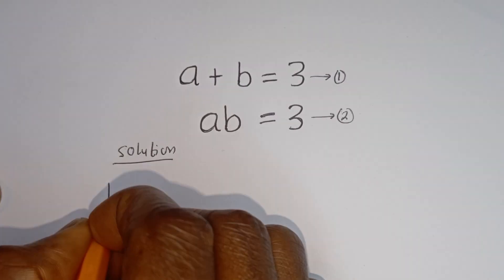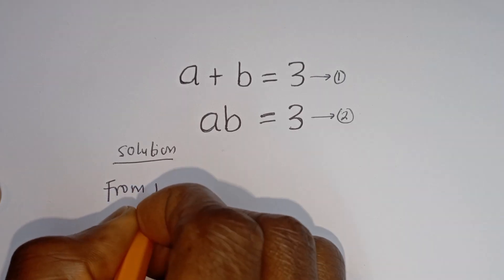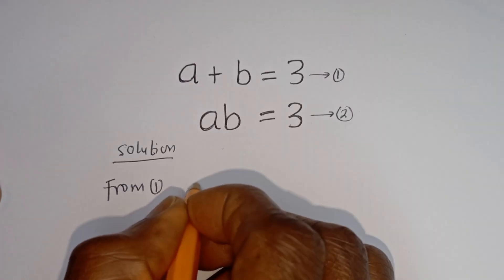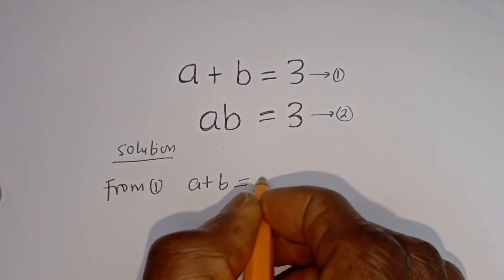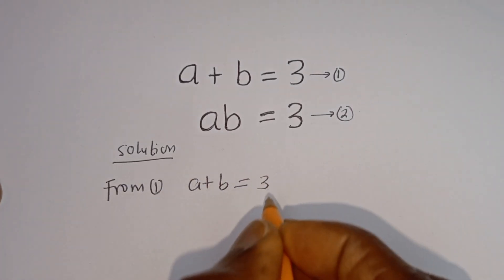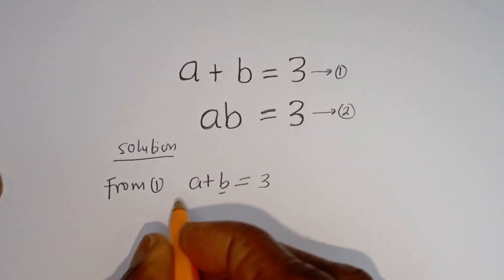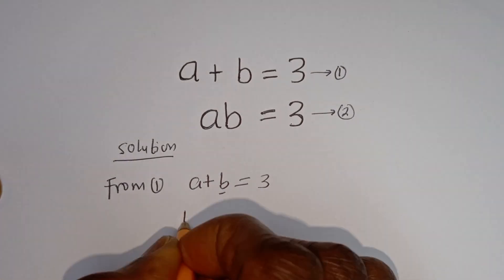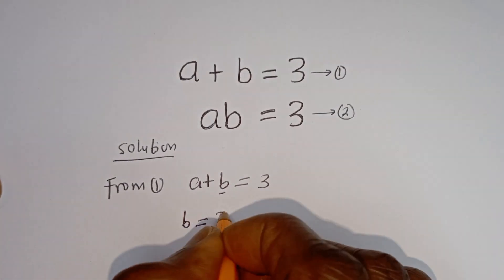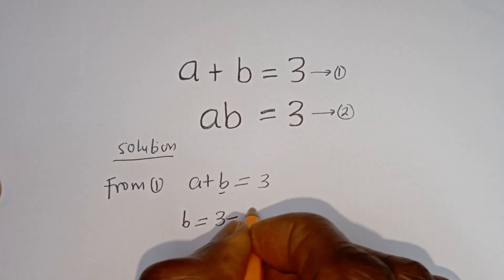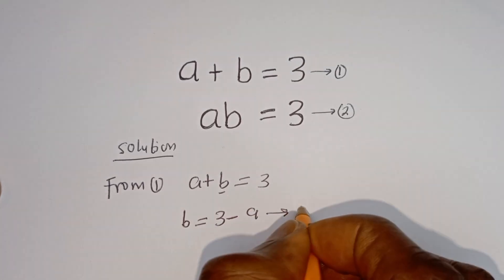Then from equation 1, A plus B is equal to 3. Let's make B the subject of the formula. B is equal to 3 minus A. Let's call this equation 3.